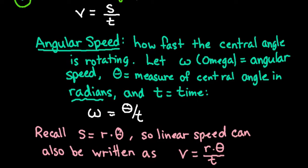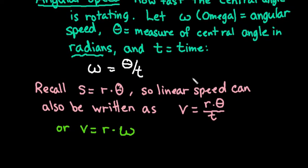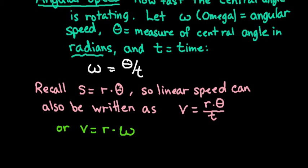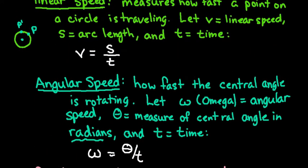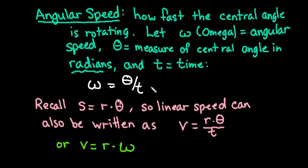We can write this in terms of each other. So remember that s is the length of the arc. So s represents the arc length, and we can find the arc length as r times the central angle. So we could rewrite the linear speed formula as v equals r times theta divided by t, where r times theta is just s. And so it's just another form of writing the arc length, and that's actually how we find it.